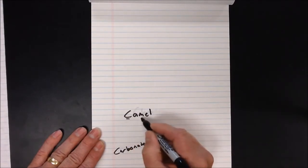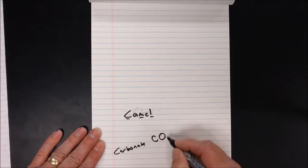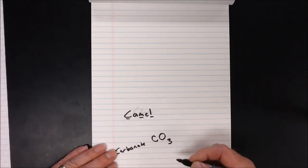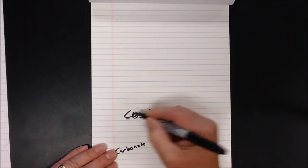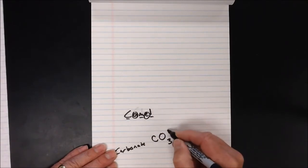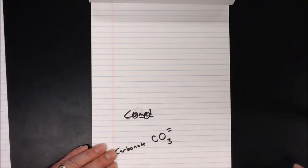Camel tells us about carbonate. Carbonate is carbon with oxygen. Camel has three consonants, so it's CO3 — three oxygens. It has two vowels, so carbonate has a negative two charge.